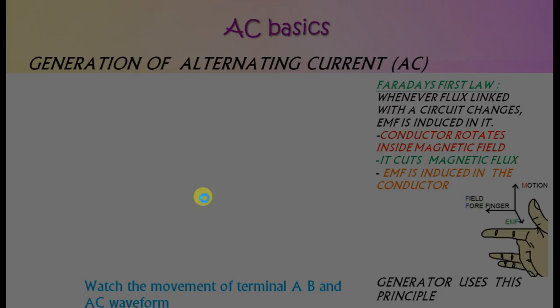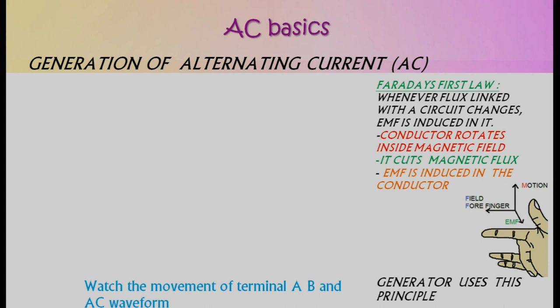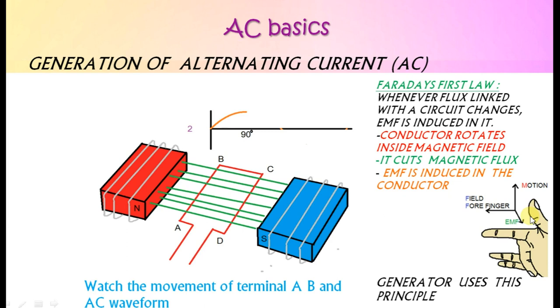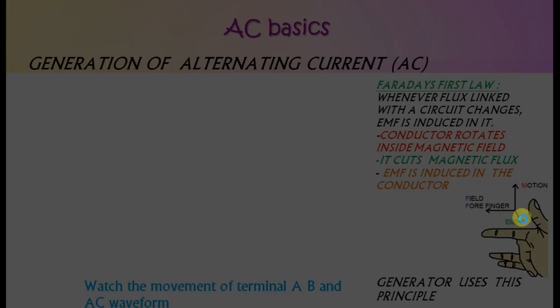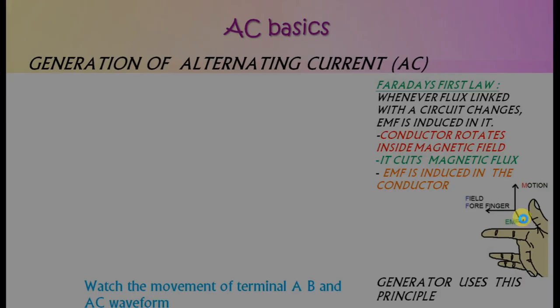The direction of EMF is given by Fleming's right-hand rule, also called the generator rule. With thumb, forefinger, and middle finger in mutually perpendicular directions — thumb represents force, forefinger represents field, and middle finger represents EMF. This law is used in electric generators, hence the name generator rule.